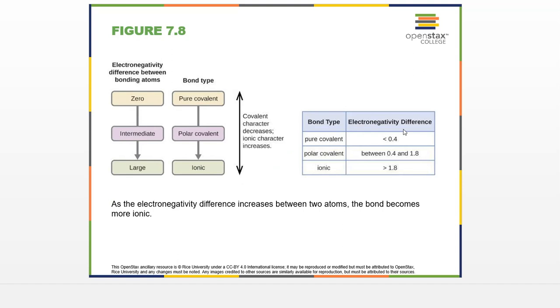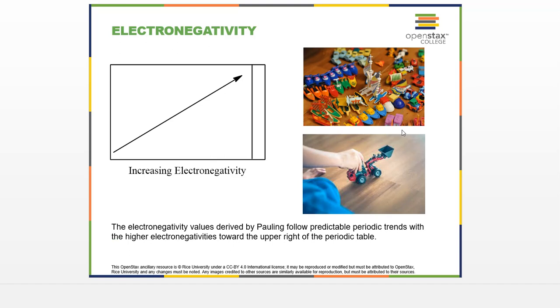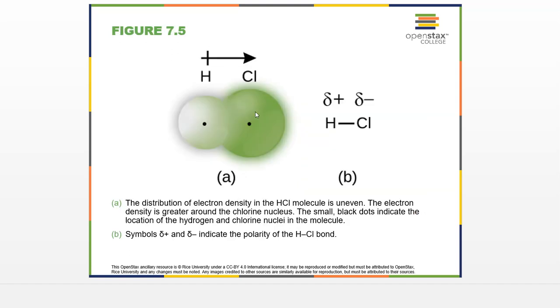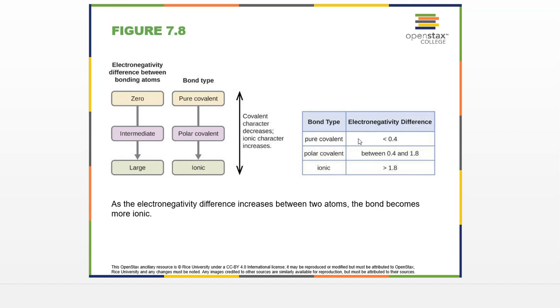One other thing that is sometimes used is the difference in electronegativity. It turns out you can actually look up the values of electronegativities. I don't even have them here. I just would like you to know this relative trend, but you can look up the differences in electronegativities. A pure covalent bond has a difference of an electronegativity of less than 0.4. This typically occurs if you have something that's diatomic, like if you have an oxygen bonded to an oxygen. The difference in electronegativity is zero because they're both oxygen, so they both have the same electronegativity.